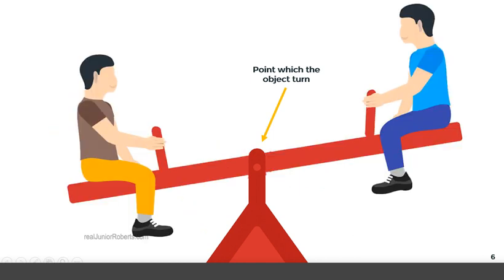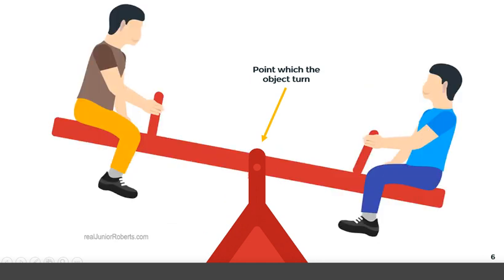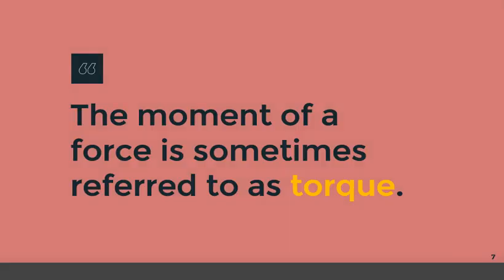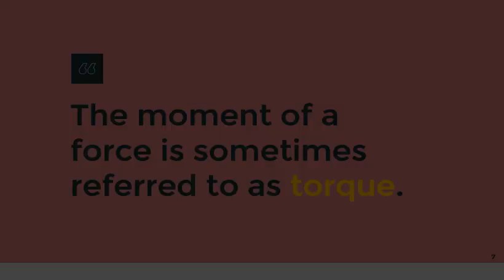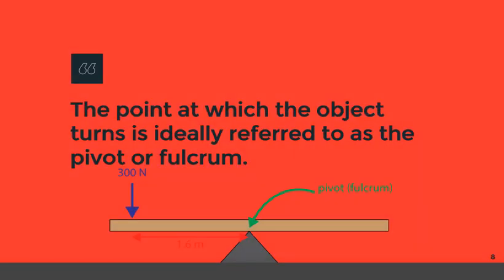The point where the object can turn is called the pivot, also known as the fulcrum. The moment of a force is sometimes referred to as the torque, which is essentially a turning effect. Here we have another example of a system able to turn about a pivot, where a force is acting some distance away from the pivot, causing a turning effect or a moment on the body.